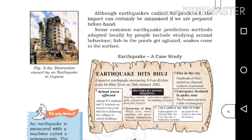Fish in the pond get agitated. Snakes come to the surface. The P waves and S waves are detected.